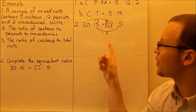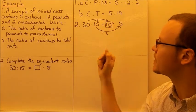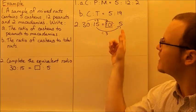So fifteen divided by three is five. We need to do the same to the other number. Thirty divided by three is ten. So the answer there is 10:5.